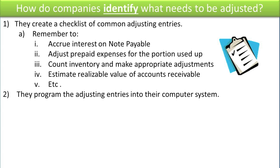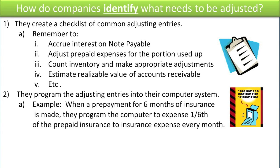They can also program the adjusting entries into their computer system. For example, when they prepay for six months of insurance, they can program the computer to expense one-sixth of that prepaid insurance — which is an asset — to the insurance expense every month. So by the end of the six-month period, the prepaid insurance balance is zero, and they will have recognized six months' worth of insurance expense.